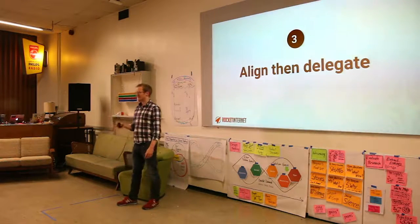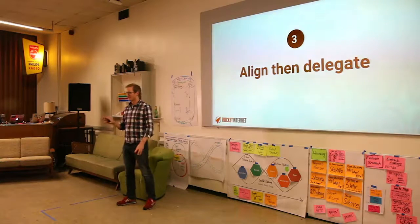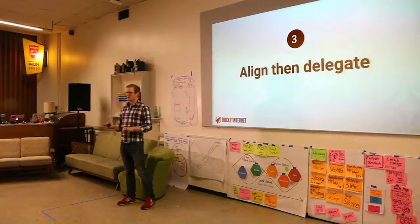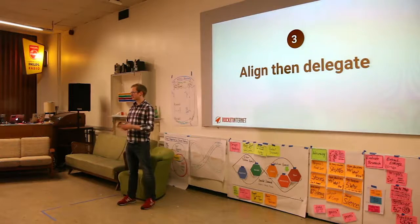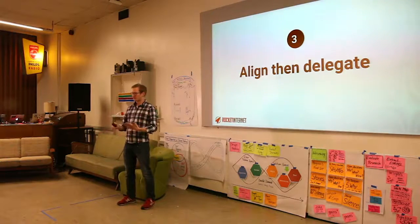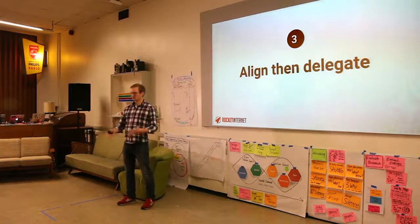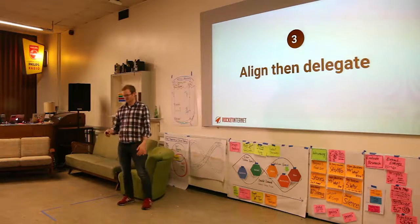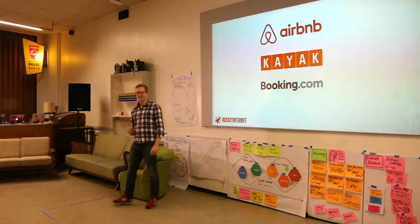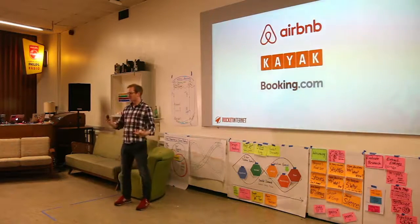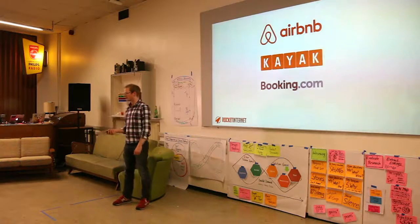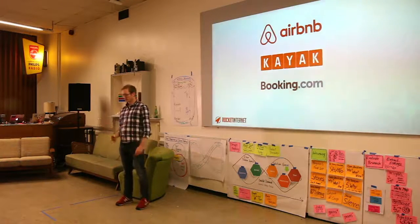Third point, align and delegate. What I mean here is, if you're doing something quickly, then it's really important that you align on the big topics. And you all know the vision of what you're delivering. But once you've agreed the big topics, then you really need to make the most of every team member. So delegate stuff to them and let them get on with it. For us, the big questions that we needed to align on was the business model.